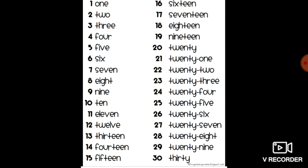1 to 30 number names को आपको अपनी math की notebook में write करना है और learn करना है। एक बार फिर से बता दूं, 20 तक आप already learn कर चुकी हैं। 21 से आपको 20 लिखते जाना है और 1, 2, 3 add करते जाना है। जैसे 20 फिर 1, 20 फिर 2, 20 फिर 3। और आपको 1, 2, 3 की spelling भी आती है, तो बहुत easy रहेगा। आपको 30 की spelling और 20 की spelling learn करनी है।